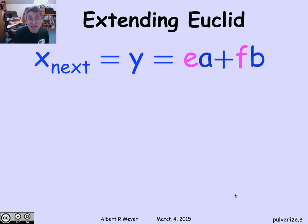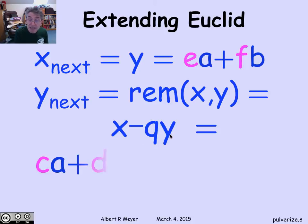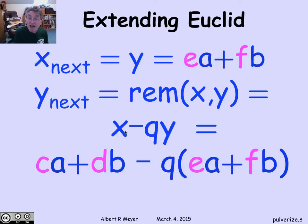Well, how does Euclid work? Well, remember, at the next step, the value of x is the old value of y. So if I had the old value of y as ea + fb, then I clearly have the next value of x as the same linear combination that y had previously. What about y next? Well, at the next step, the value of y is simply the remainder of x and y.